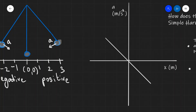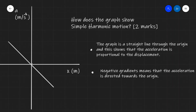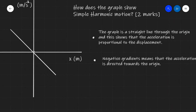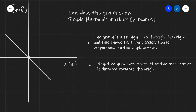To sum things up: how does this graph show simple harmonic motion? The graph is a straight line through the origin, which shows that acceleration is proportional to displacement. The negative gradient means that the acceleration is directed towards the origin. If you have any questions, please feel free to drop a comment below, and thank you very much for watching.